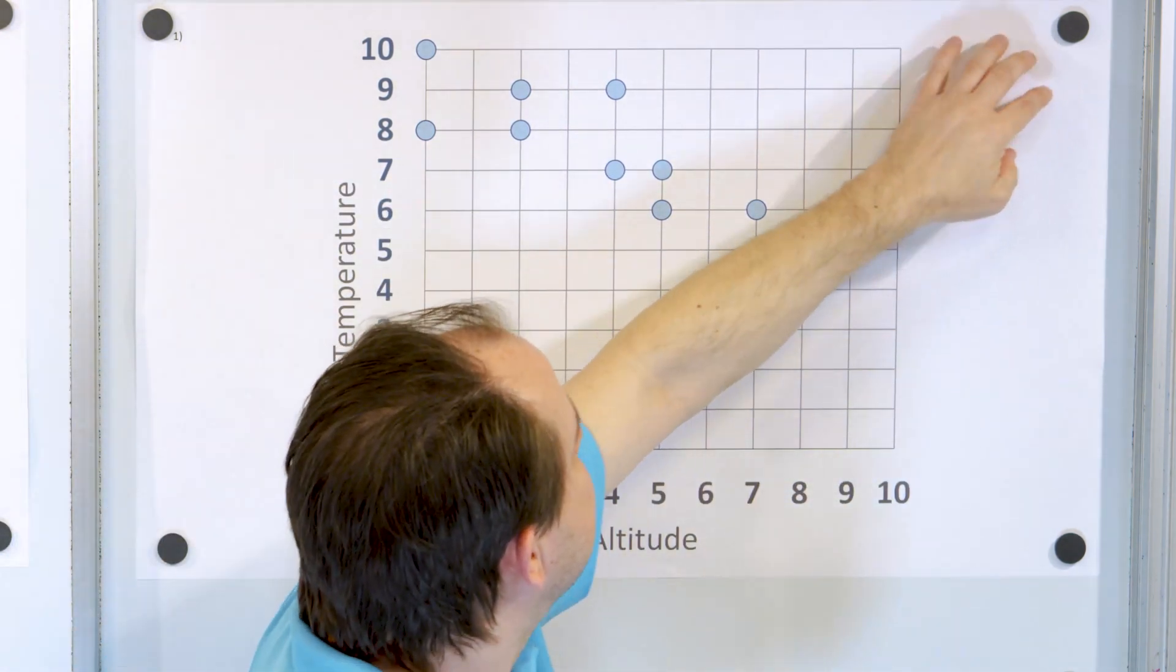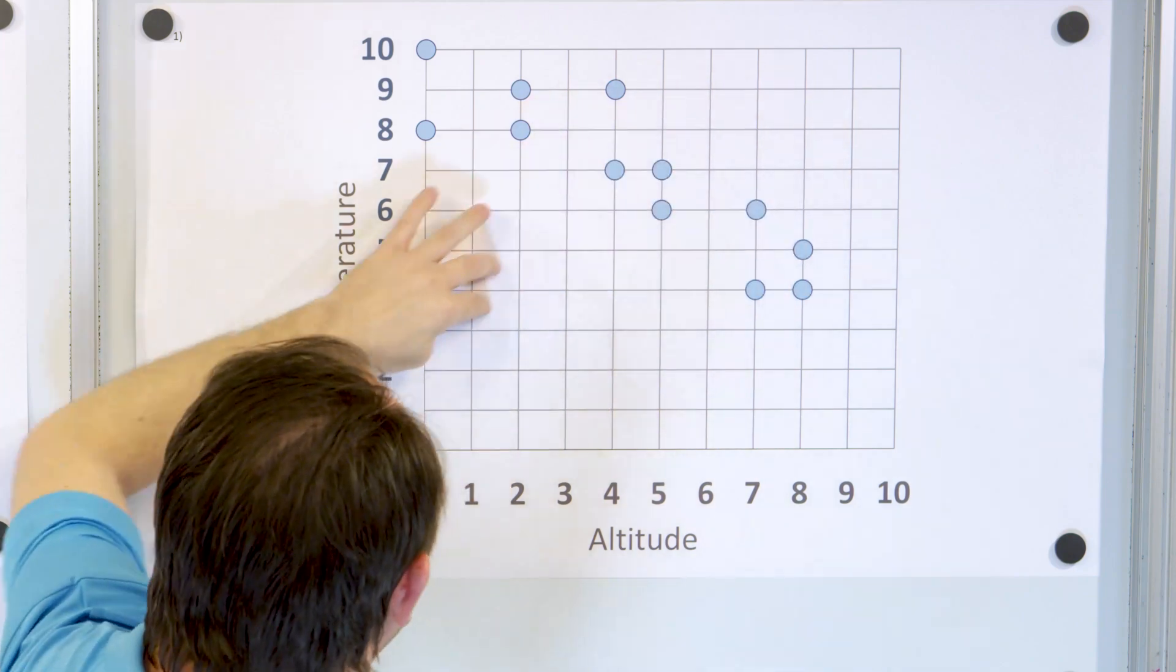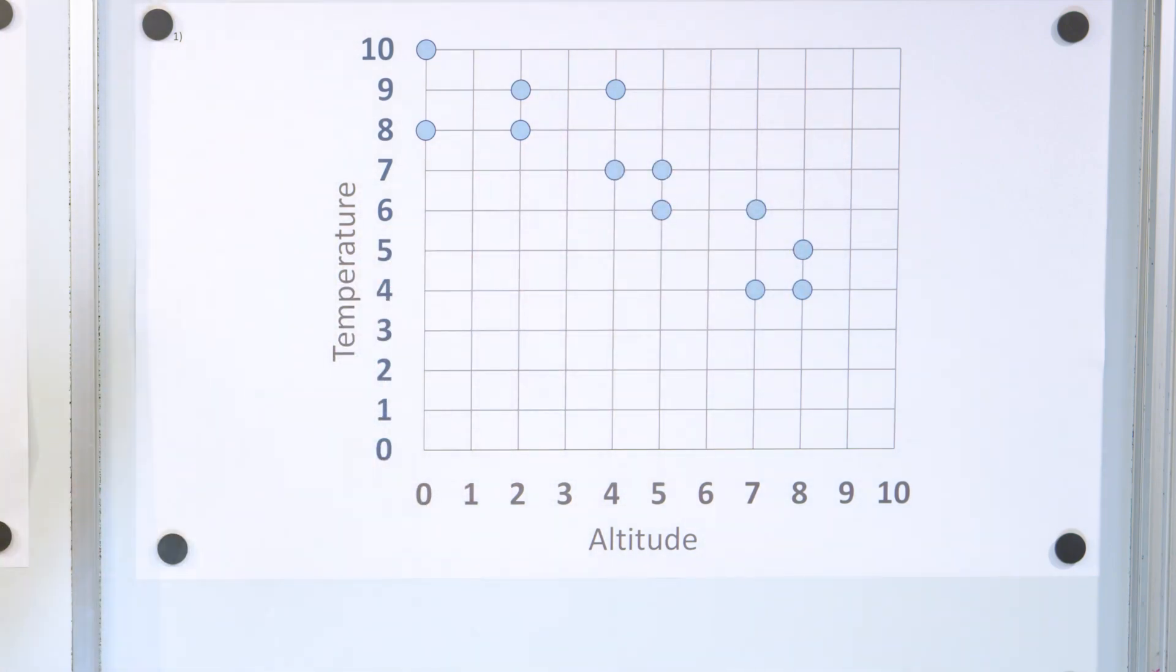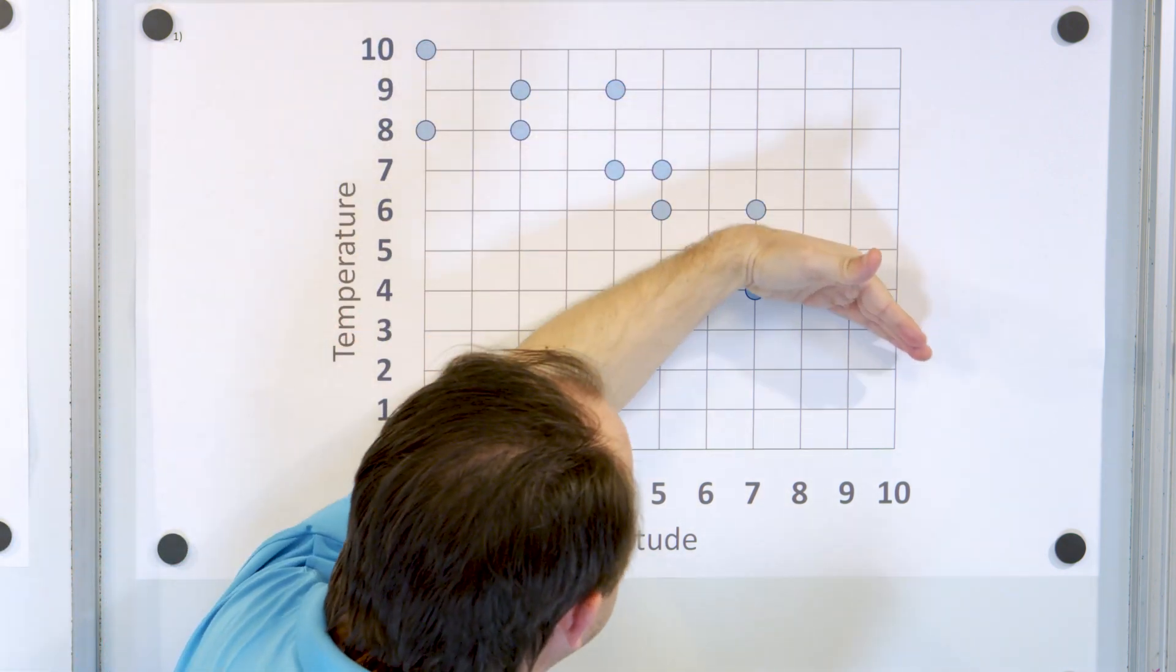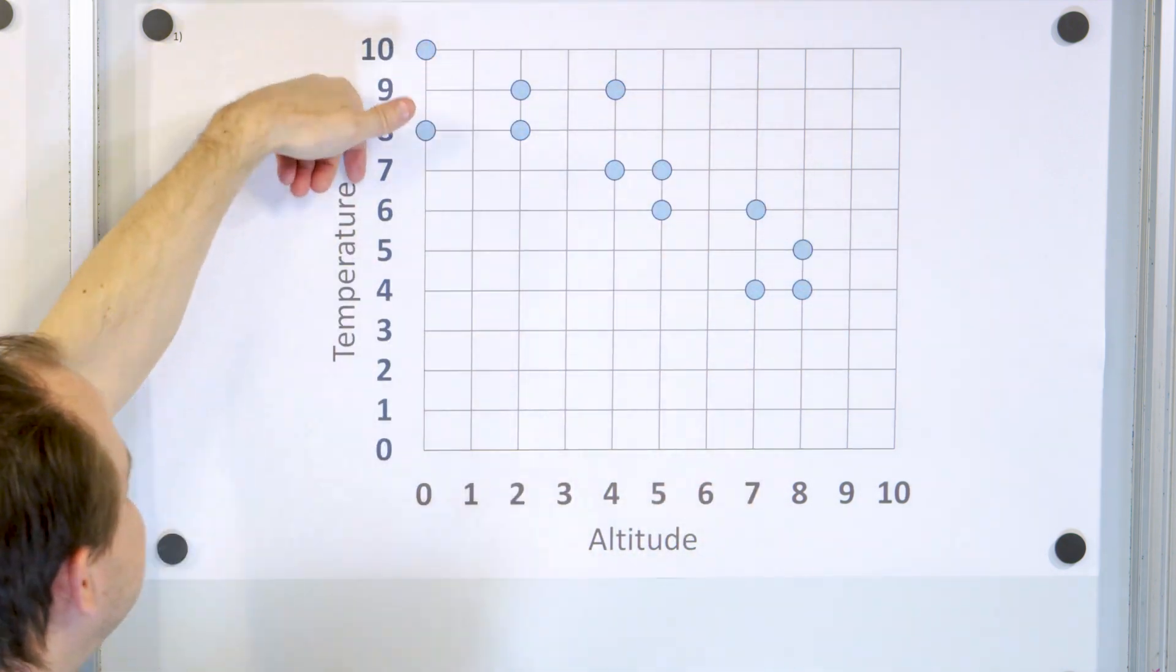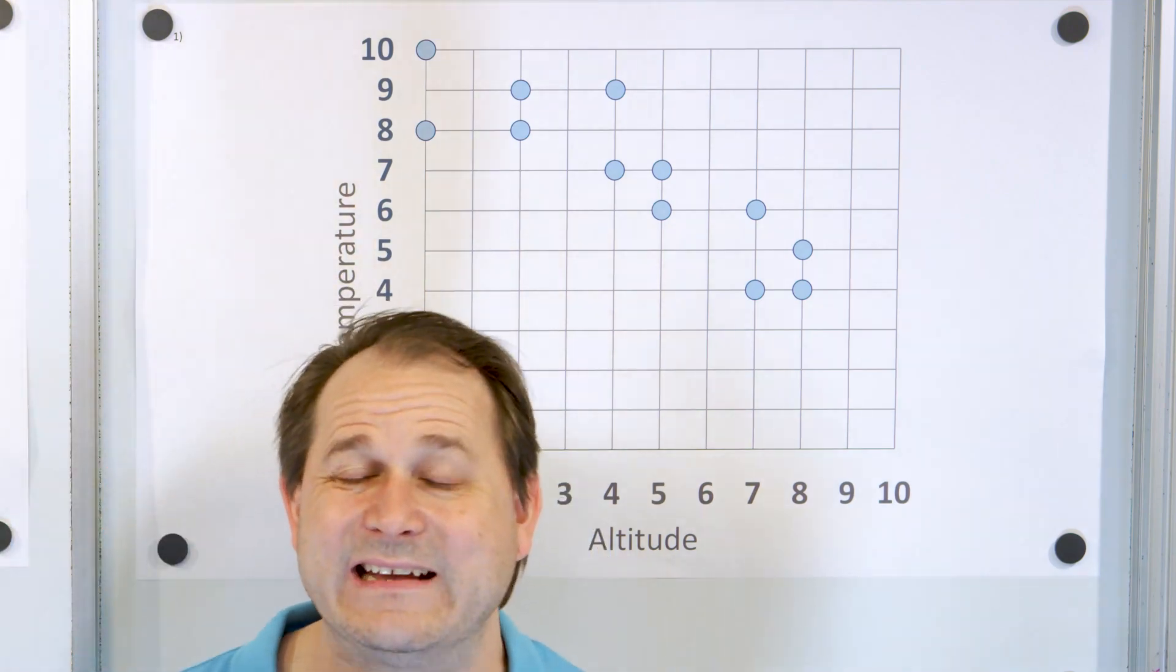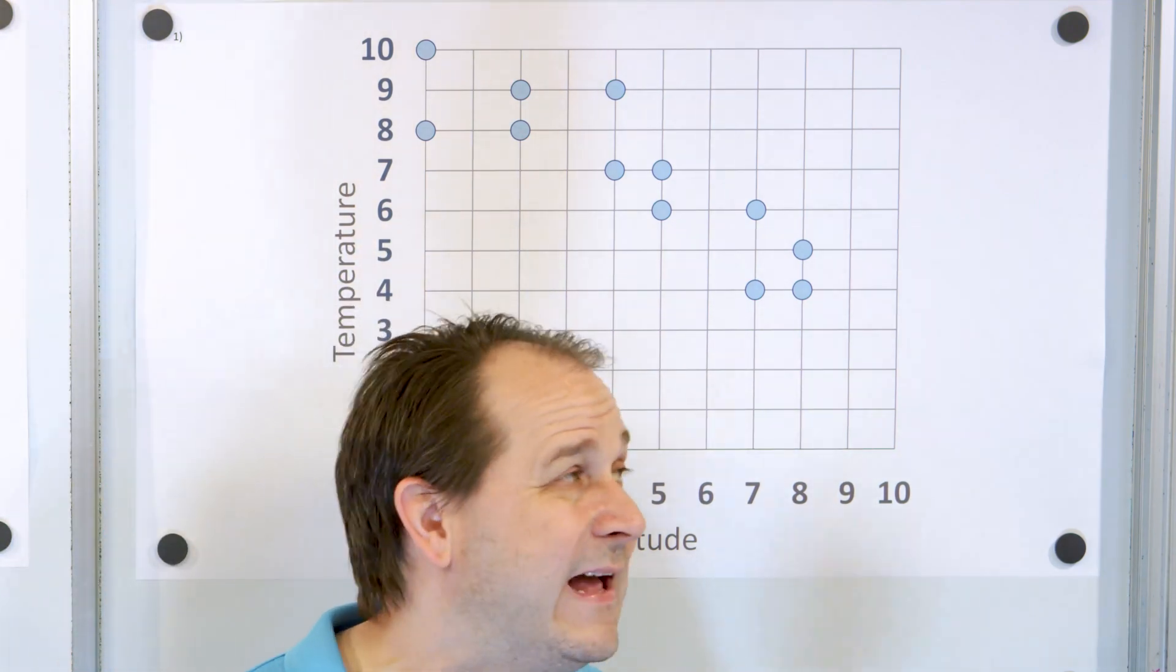Each little pair of points here are two separate mountains, but you can still see there's a clear trend here. The general trend is down. As the altitude goes up, the temperature goes down. So we say this is a negative correlation.